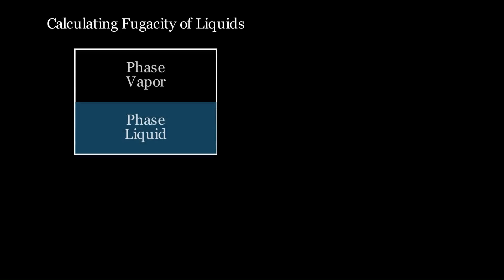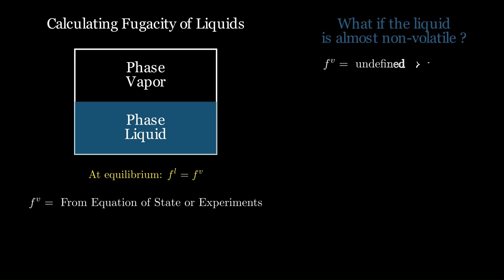Let's talk about how we determine the fugacity of a liquid from vapor-liquid equilibrium. By definition at equilibrium, f_liquid equals f_vapor. We can often get f_vapor directly from an equation of state or from experimental data. But what if our liquid barely evaporates? Then the vapor phase is essentially missing and f_vapor is undefined. So how do we get the liquid's fugacity now?